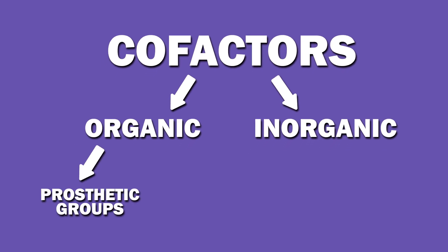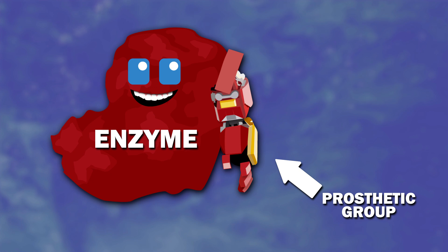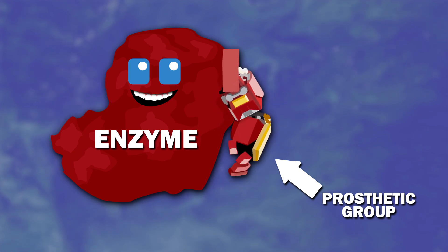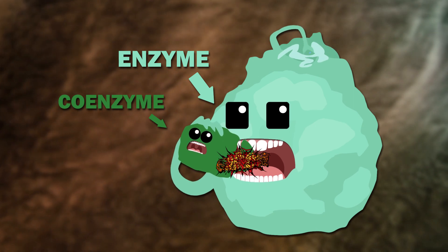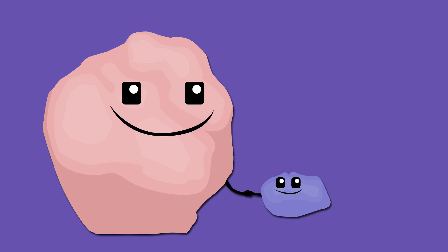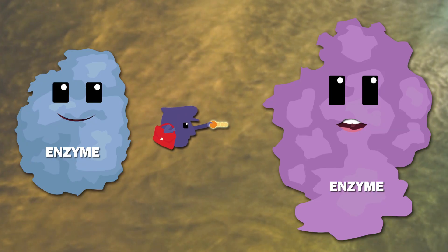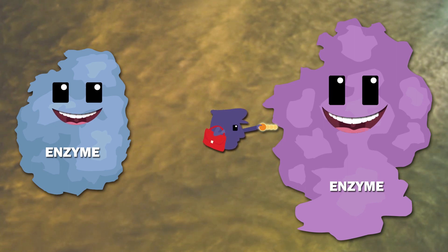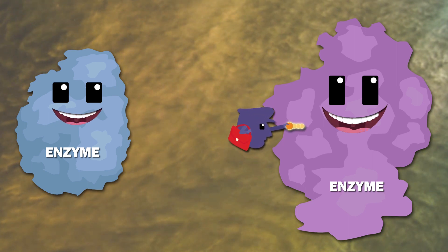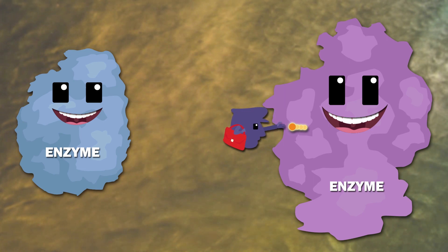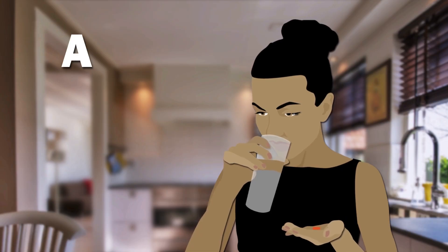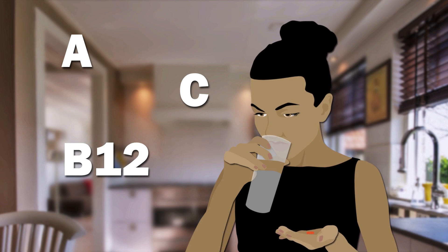Organic cofactors can be either prosthetic groups or coenzymes. Prosthetic groups remain tightly bound to the enzyme. Coenzymes are frequently consumed and recycled during the catalytic reaction. Some types of coenzymes can be called co-substrates — basically substrates that are loosely bound to the enzyme. Coenzymes are often small organic molecules that transport chemical groups, such as ATP or NADH, from one enzyme to another. Some vitamins, such as vitamins A, C, and B12, function as coenzymes.